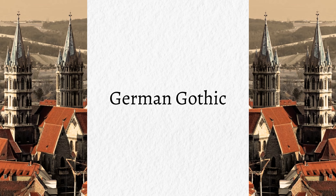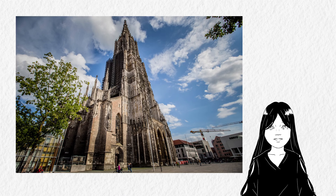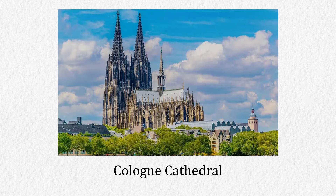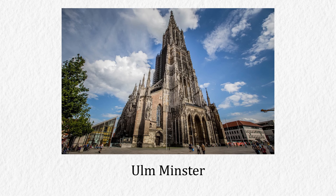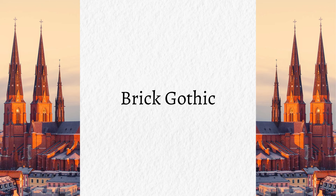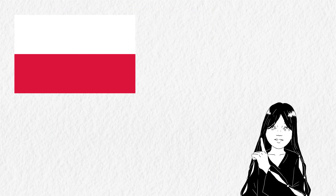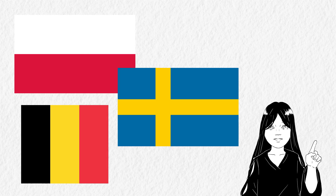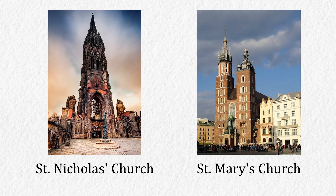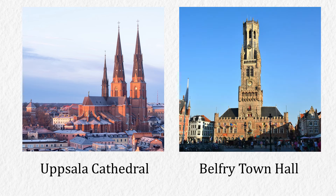German Gothic buildings were known for their large towers and large spires. Since their buildings were so massive, many of them could not be completed according to their original plans. This includes Cologne Cathedral, built in 1248 and then suspended in 1560, and Ulm Minster, built in 1377 and halted in 1543 before being continued in the 19th century. Another distinctive German style is Brick Gothic — this unique red brick architecture was also well known in countries around the Baltic Sea like Poland and Sweden, as well as in Flanders, or modern-day Belgium. Some examples are St. Nicholas Church in Germany, St. Mary's Church in Poland, Uppsala Cathedral in Sweden, and the Belfry of Bruges.